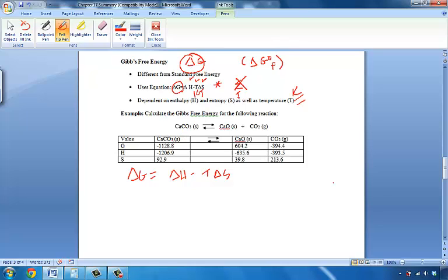All right, so let's take a look at this particular problem that asks us to calculate Gibbs free energy for the reaction of the decomposition of calcium carbonate into calcium oxide and carbon dioxide gas. Let's say this is happening at 25 degrees Celsius. Delta G equals delta H minus T delta S is our equation.